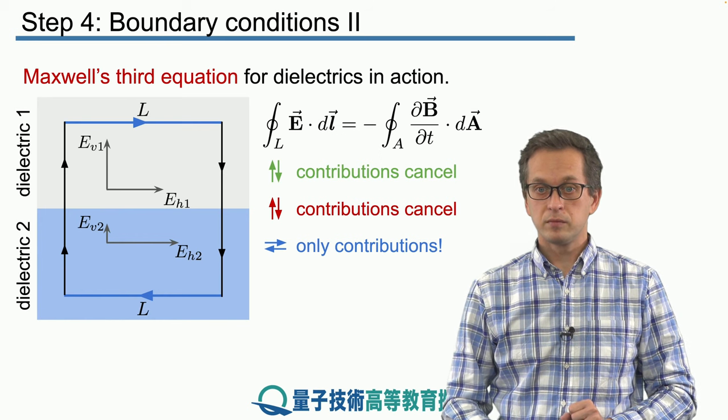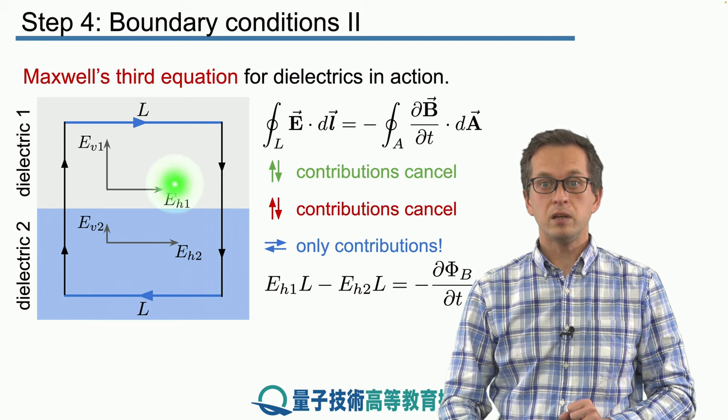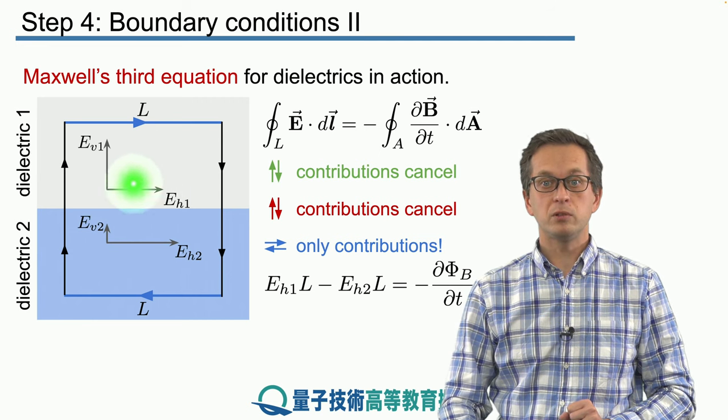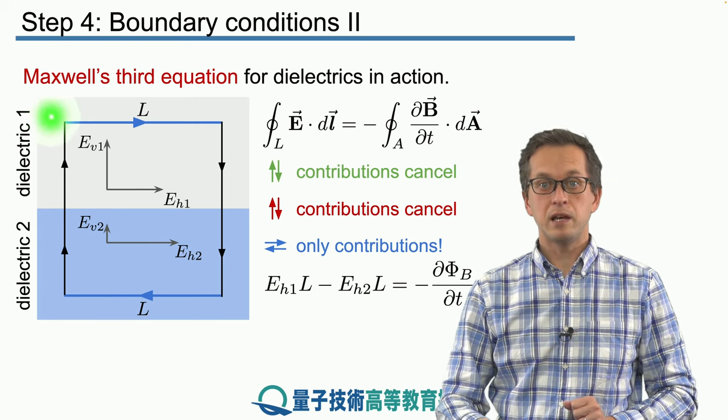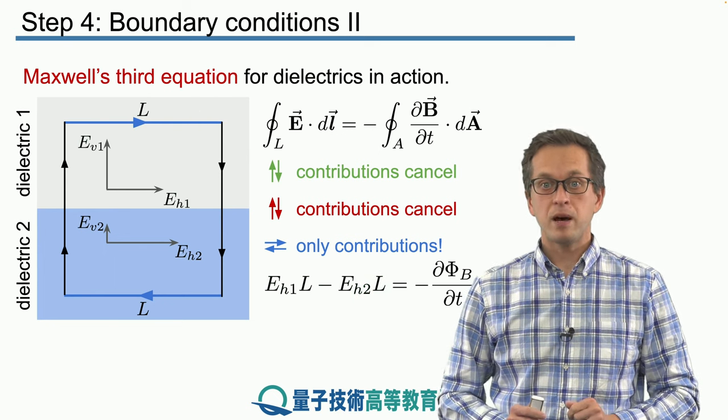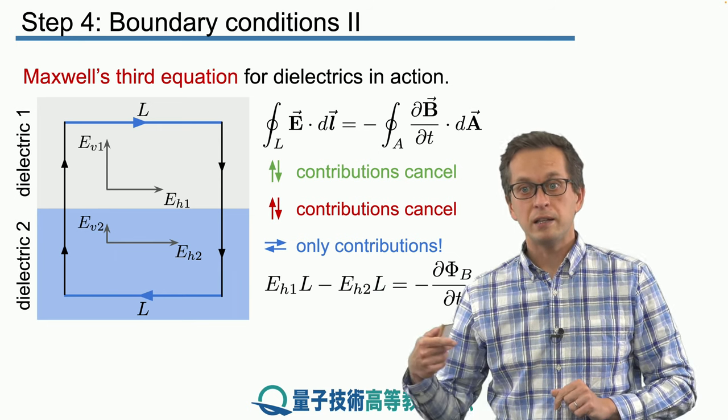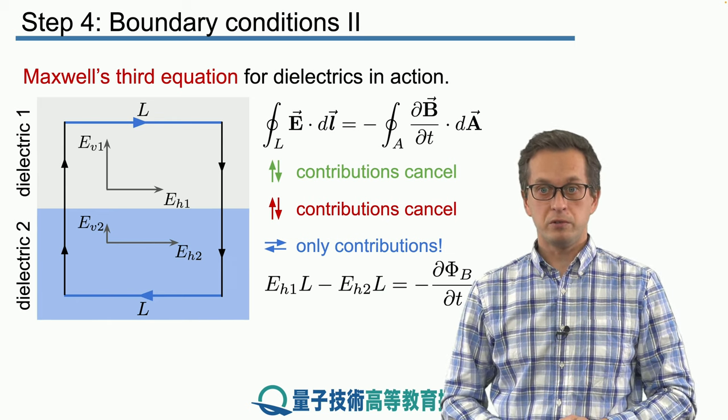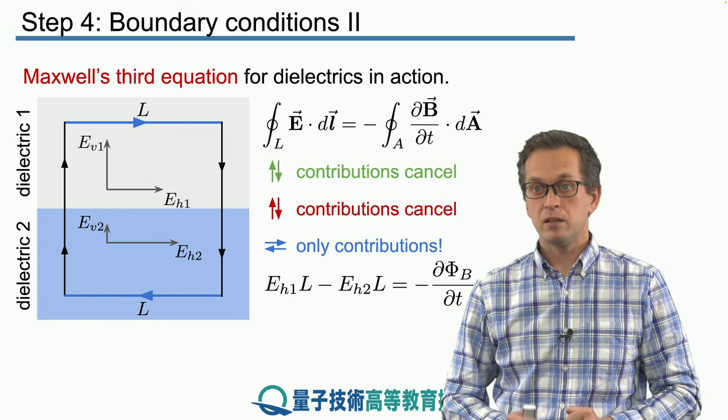We can write the following. EH1, that's the only field component contributing to the line integral because it's in the direction of the line segment, times L, that's the length of our line segment, minus EH2 times L. The reason why there is a minus is the same as we saw in the previous step for the surface integrals. Now the line segment is in the opposite direction, therefore we must introduce a minus. And this difference is equal to negative d of phi b over dt, the time change in the magnetic flux.